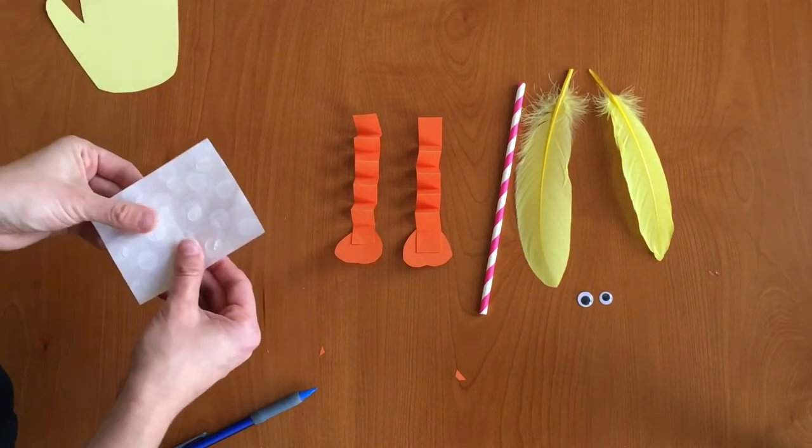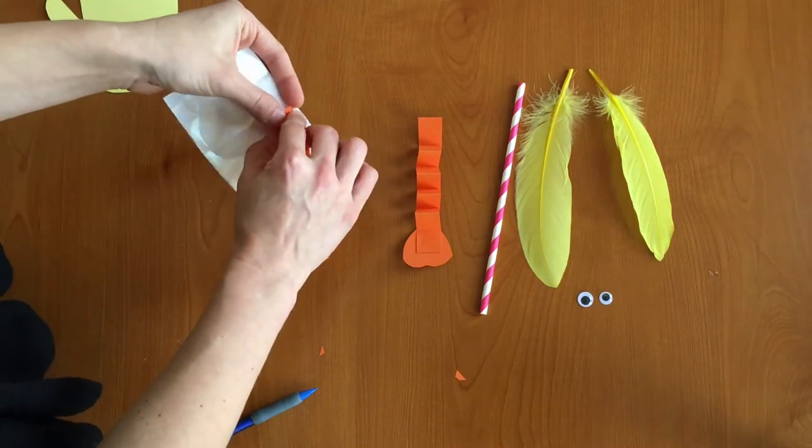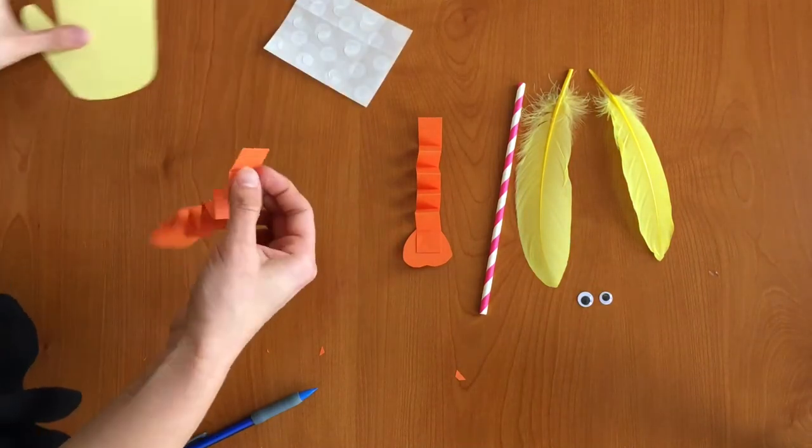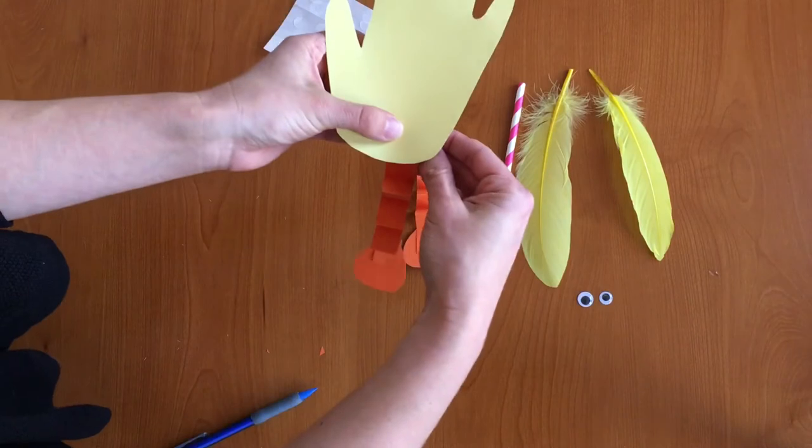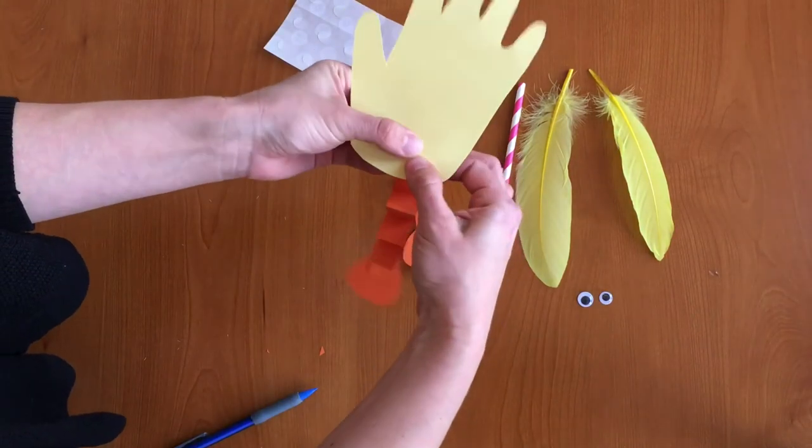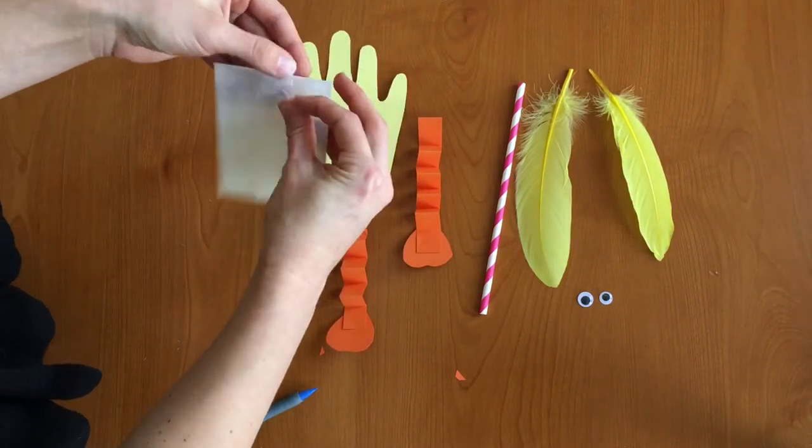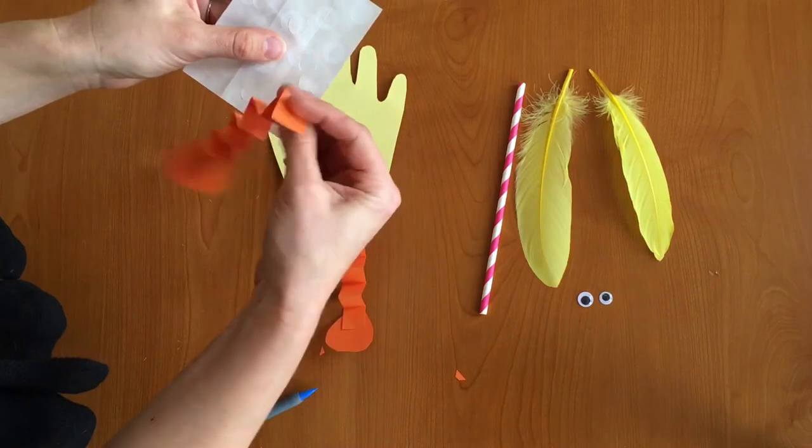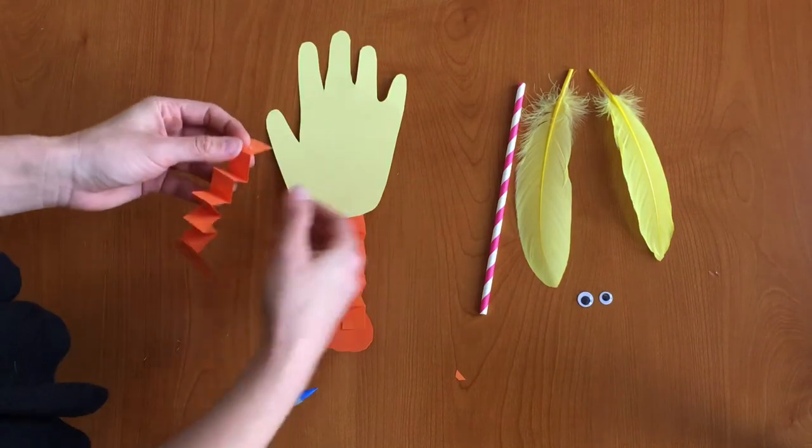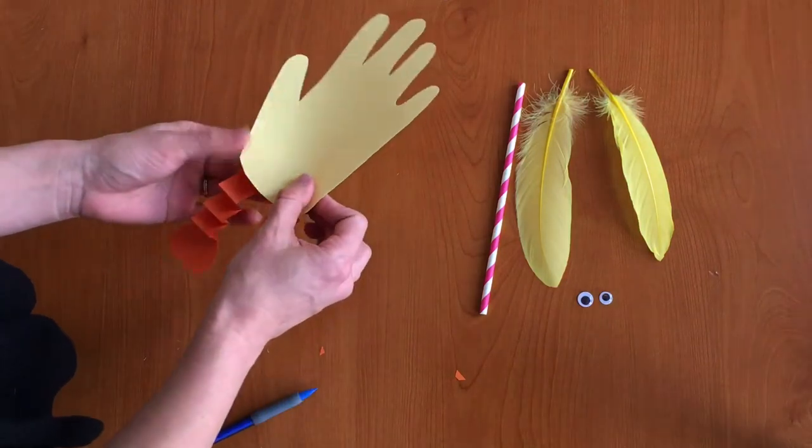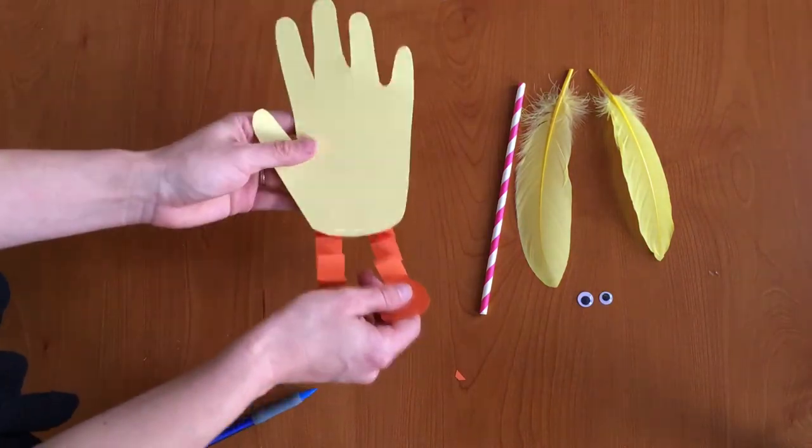Let's go ahead and attach these to our body. So we're going to take another glue dot on the other end of our bouncy legs. And you're just going to attach it to the back of your handprint. There we go. And now we have a chick with some bouncy legs. But we're not done yet, so let's keep going.